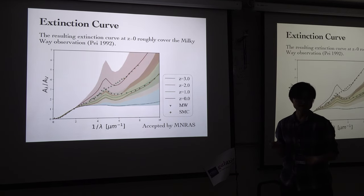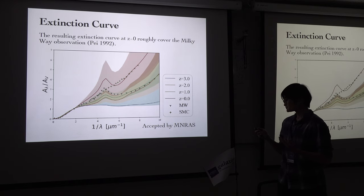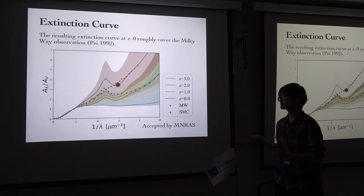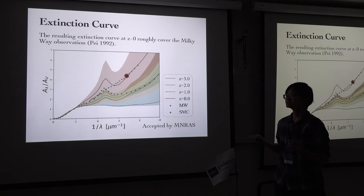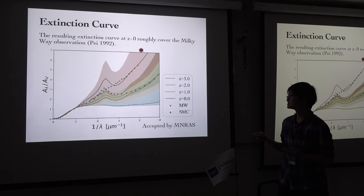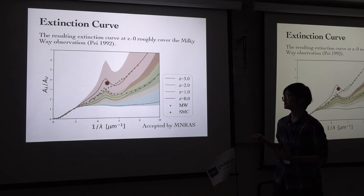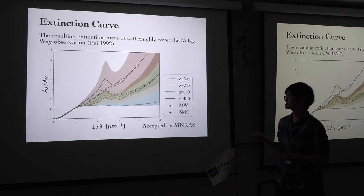By taking into account the dust composition from a reference paper and applying Mie theory to calculate the extinction, you can see that the redshift-zero curve roughly covers the measurement from the Milky Way extinction curve — this is the result from 1992. For more detail, please refer to our MNRAS paper, which has just been accepted.